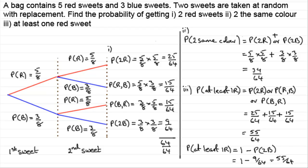Not only do we have tree diagrams like this one where probabilities are independent — this result was independent of the previous one because we put the sweet back in the bag — but I'd also like to show you another example, only with conditional probabilities. The methods don't really change; I'm just changing the notation.